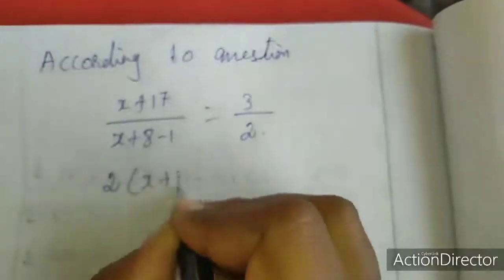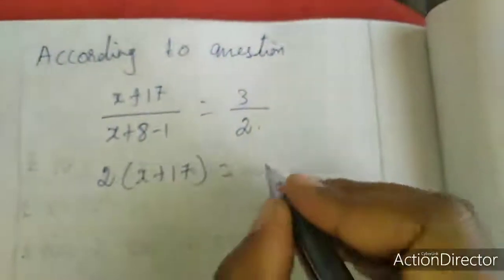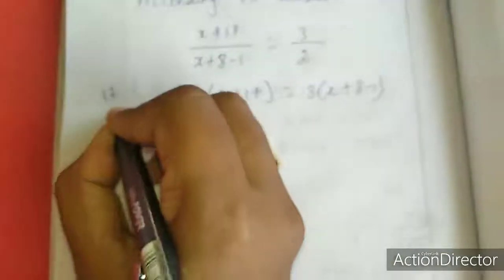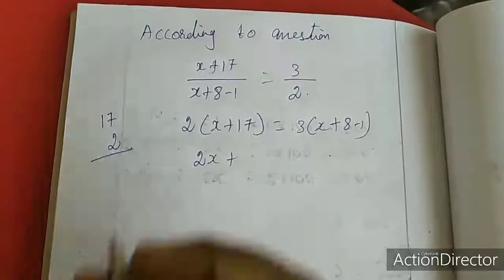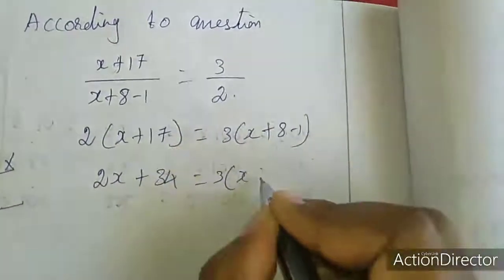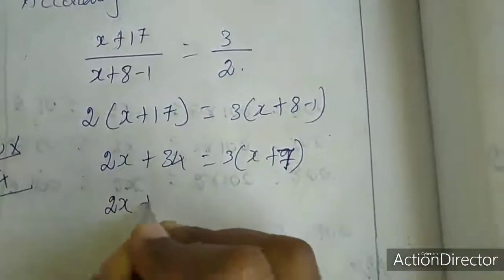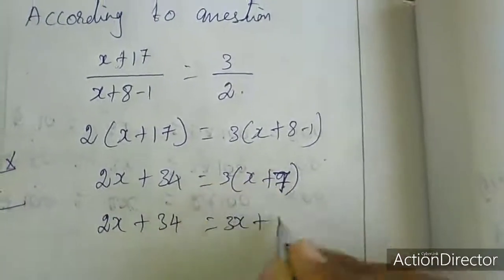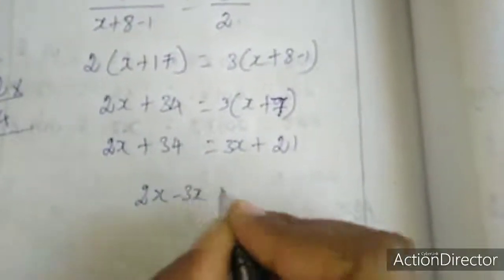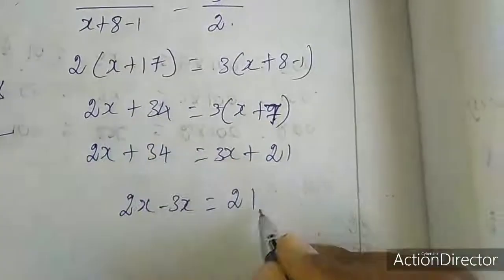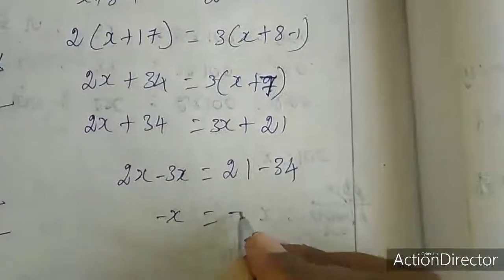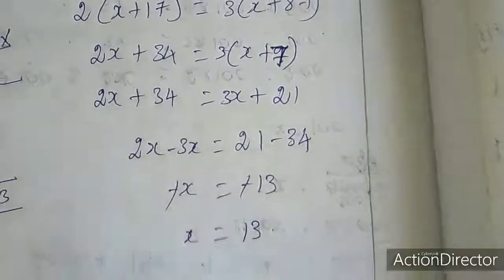I am going to cross multiply: 2 into x plus 17 equal to 3 into x plus 8 minus 1. So 2x plus 34 equal to 3 into x plus 7, which gives 2x plus 34 equal to 3x plus 21. Keeping variables on one side: 2x minus 3x equal to 21 minus 34, giving minus x equal to minus 13. So x equal to 13. We want to find out what the rational number is.